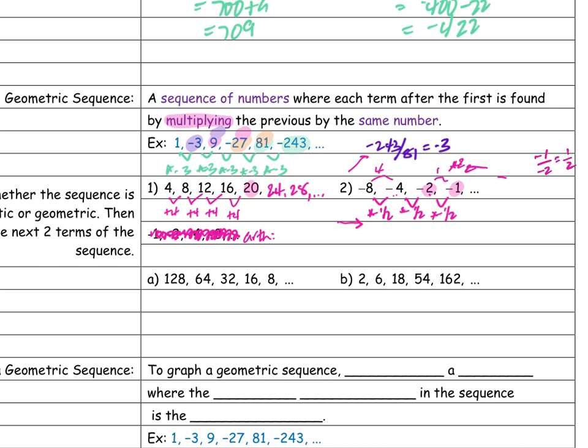Because I'm multiplying by the same number, this is geometric. Now I need to find the next two terms after negative 1. What's half of negative 1? My next term is negative one half. And then half of that — half of a half. If you have a candy bar, cut it in half, then cut that half in half — you have a fourth. So negative one fourth.